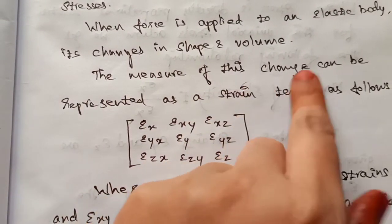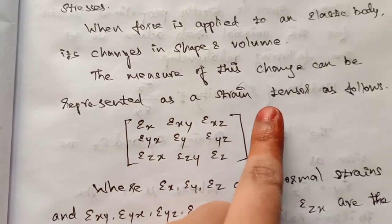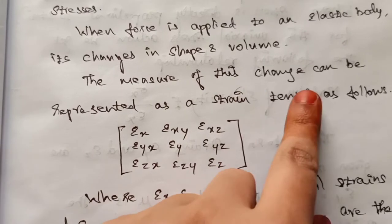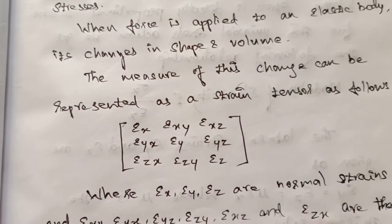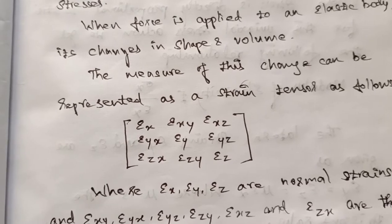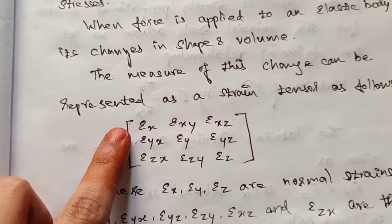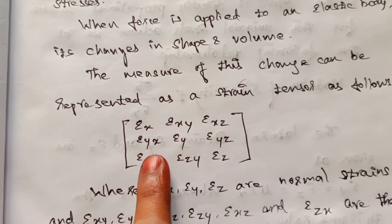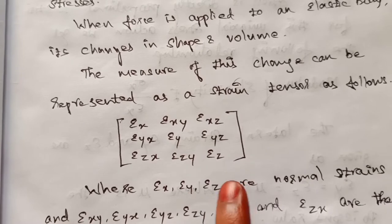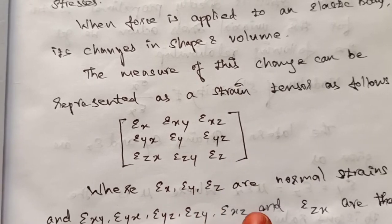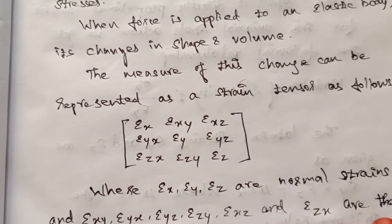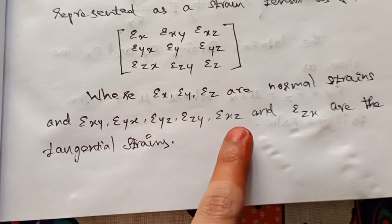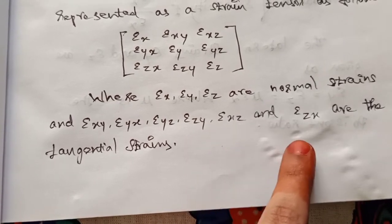The measure of this change can be represented as a strain tensor. The strain tensor includes components: strain_xx, strain_xy, strain_xz, strain_yx, strain_yy, strain_yz, strain_zx, strain_zy, strain_zz. Here, strain_xx, strain_yy, and strain_zz are the normal strains, while strain_xy, strain_xz, strain_yx, strain_yz, strain_zx, and strain_zy are the shear (tangential) strains.